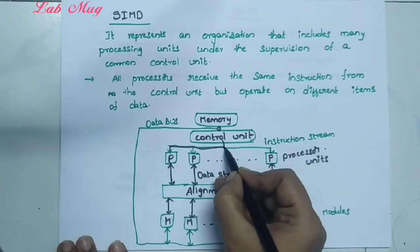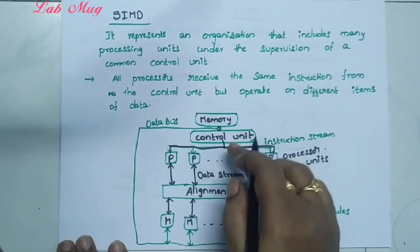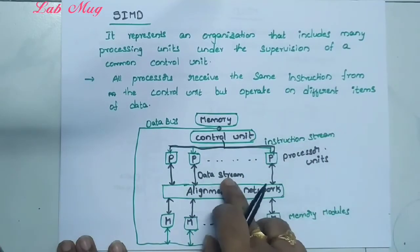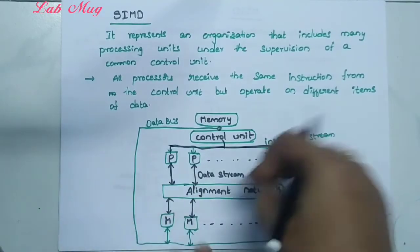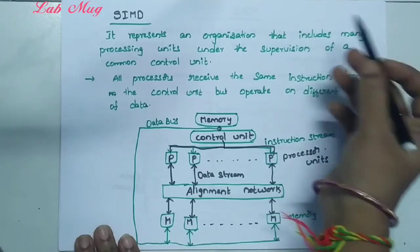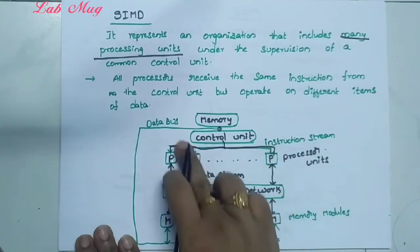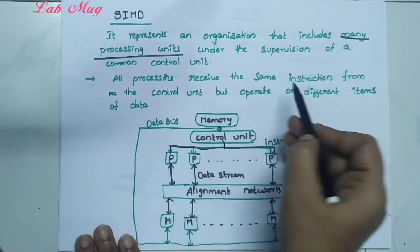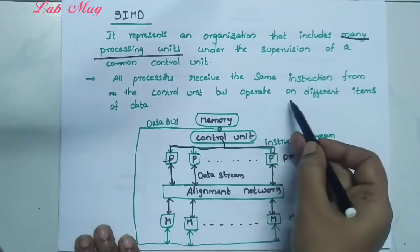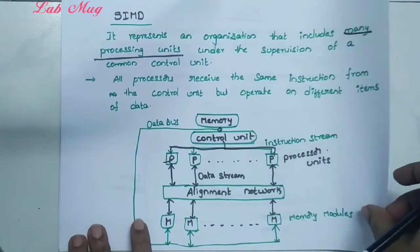From the single control unit, only one instruction goes to multiple processors. The instruction is only one — the control unit issues each instruction once. But it is sent to multiple processor units. Via data streams and alignment network, data from memory modules is sent to processing units. That's why it represents an organization that includes many processing units under the supervision of a common control unit, because all processing units are controlled by the single control unit. All processors receive the same instruction but operate on different items of data.